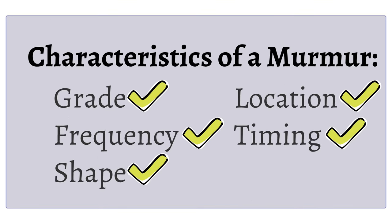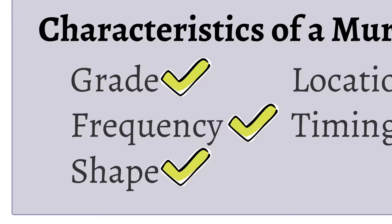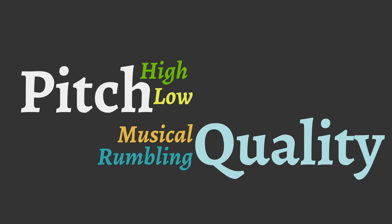In addition to intensity, pitch is important to describe a murmur. We are trying to hear if the murmur is high pitched or low pitched. The quality of the murmur can be another descriptive feature, such as if the murmur is musical, rumbling, or scratchy.